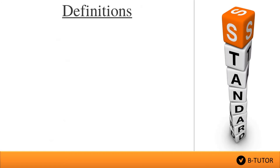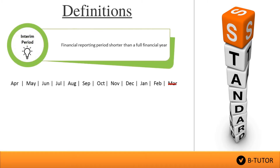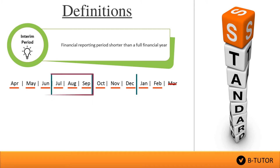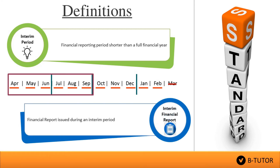Our first topic: definitions. We have two definitions to learn in this IAS. Number one, what is an interim period? Interim period means a financial reporting period shorter than a full financial year — for example, monthly, quarterly, or half-yearly period. Number two, what is an interim financial report? Interim financial report means a financial report issued during an interim period.